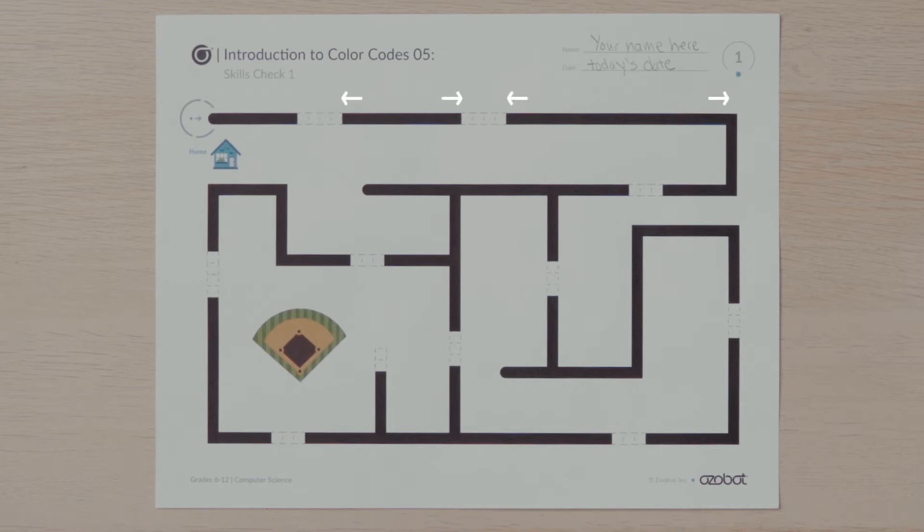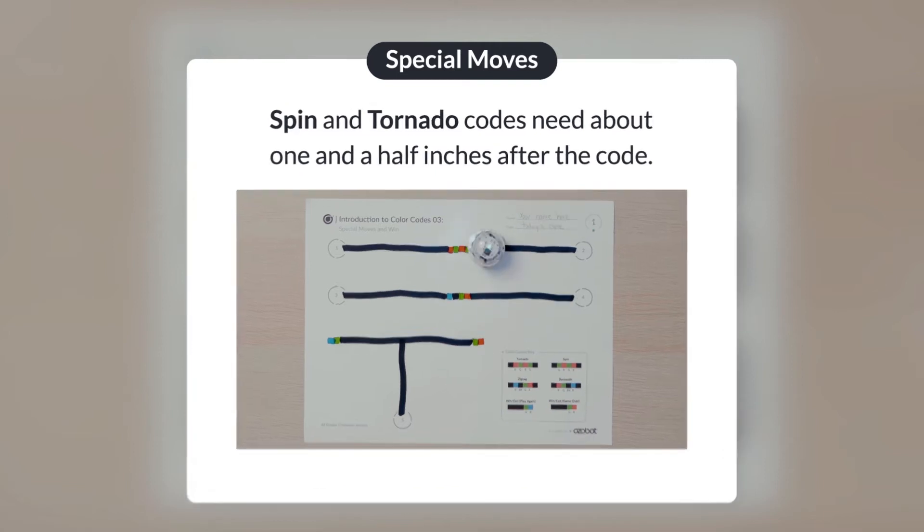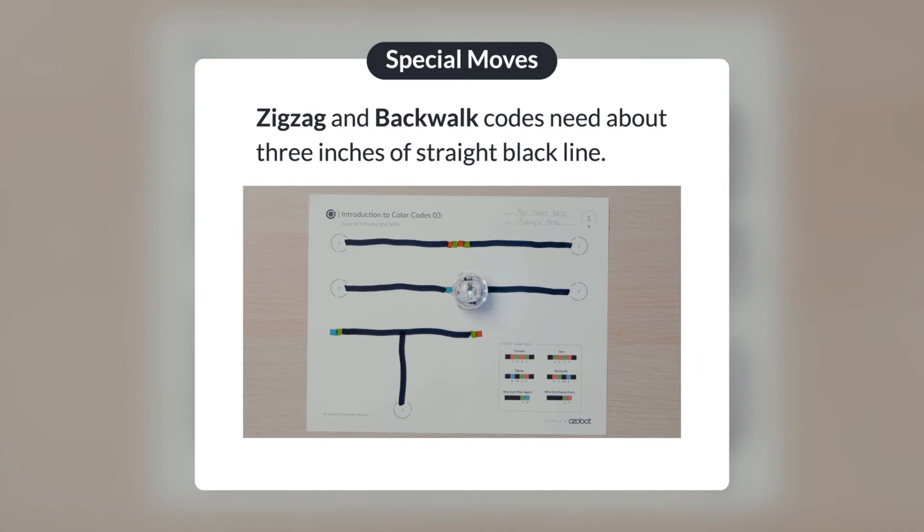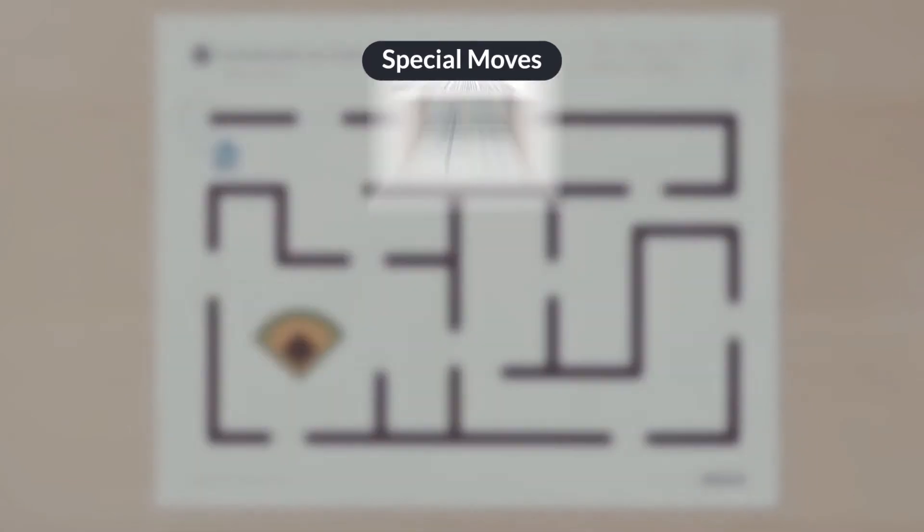The space after each color code will determine which special move codes you can use. Remember, the spin and tornado codes need about one and a half inches after the code, and the zigzag and back block codes need about three inches of straight black line after the code to properly execute the code and continue following the line.